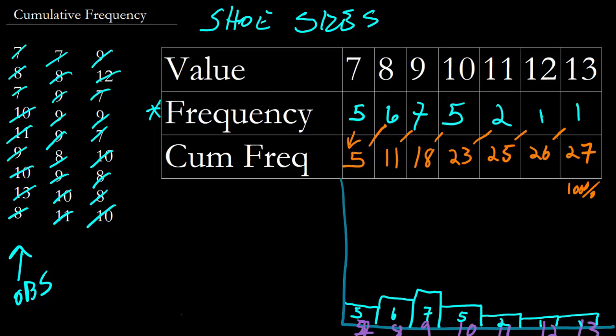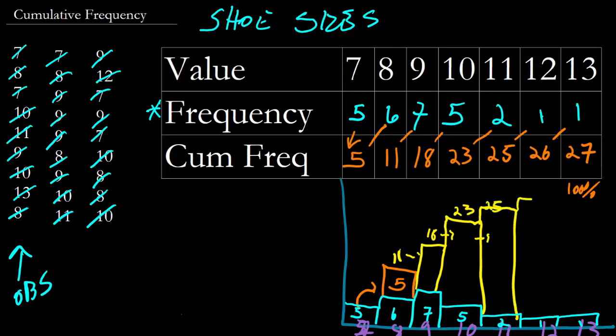What we're going to do when we do cumulative and we draw it in a graph is we're going to take these five observations and we're going to pile them here on top of this six for a total count of 11. And then we're going to take these 11 and put them here on top of the seven for a total count of 18. And then we're going to take these 18 and put them on top of the five for a total count of 23. You see what's happening here. We put these 23 over here for the next two and we get 25 total observations, 26 total observations, 27 total observations.